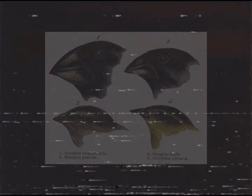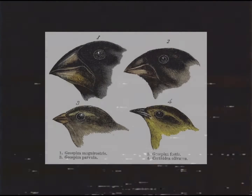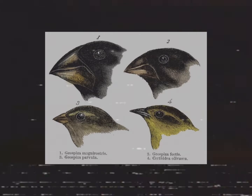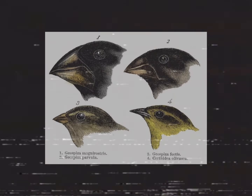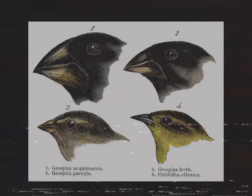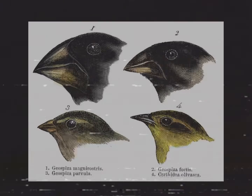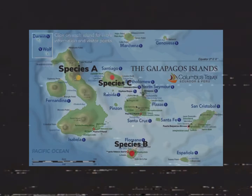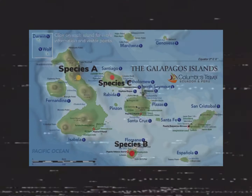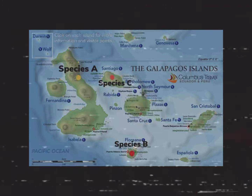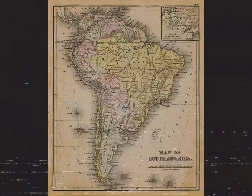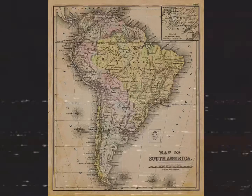Speciation: the formation of new and distinct species in the course of evolution. An example of speciation is the Galapagos finch. Different species of these birds live on different islands in the Galapagos archipelago, located in the Pacific Ocean of South America.